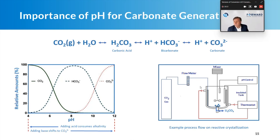Here's a rough diagram of the CO2 precipitation setup: CO2 gas with a flow meter, pH control via sodium hydroxide addition, and a heated tank — because temperature is important to the process, just as pH is critical.